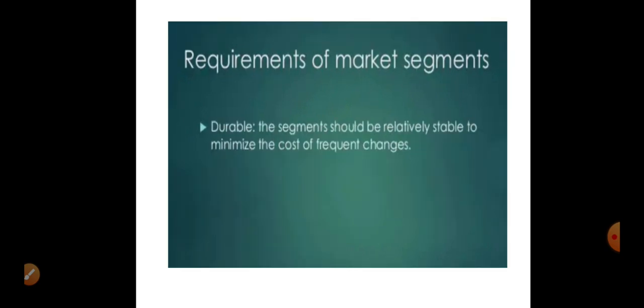Durable means when you divide the market, it should not be based on an attribute that keeps on changing. For example, when you divide on the basis of age, the age group such as one to four years should remain a stable, defined segment. These are the requirements.